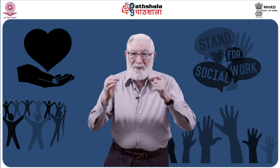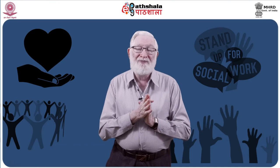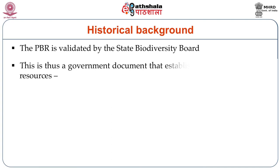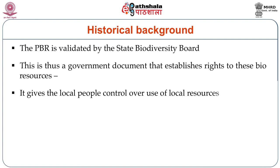Once the People's Biodiversity Register is designed and made of all the local resources and all the knowledge that goes hand in hand with them, these people will then send this local biodiversity PBR back to the State Biodiversity Board. The State Biodiversity Board is expected to endorse this and then sends it to the National Biodiversity Authority. This list of locally known plants and animals therefore becomes, in a sense, their own property. Once the PBR is validated, it becomes a government document — a document for governance of bioresources — and it gives local people control over the use of their own resources in their own environment.